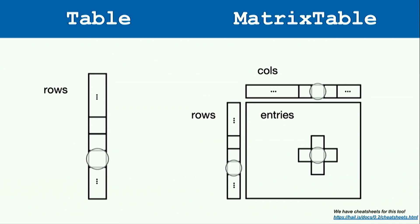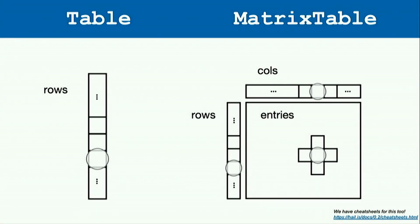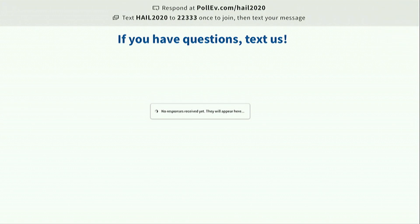There is also a slightly different data type — a table organized only by rows — which can represent annotation databases or sample IDs that you would then merge onto your matrix table. While we're running the workshop, if you have any questions, use the same polling tool from earlier since we know sometimes people are shy. Please feel free to text us at any point and we'll address it.